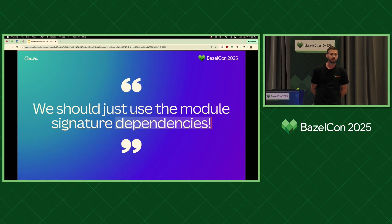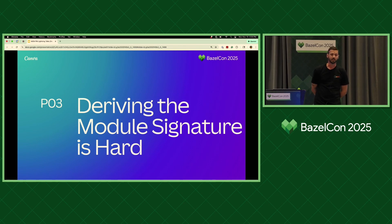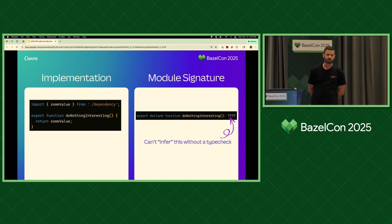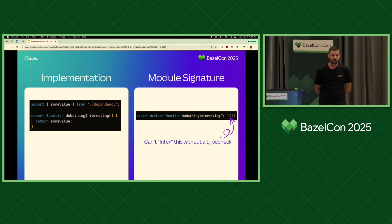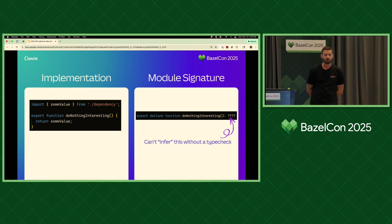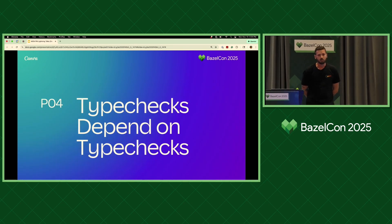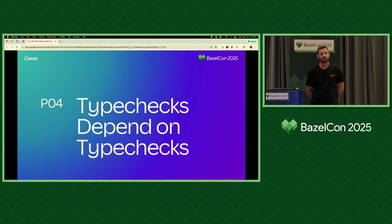Naively, you might just say, why don't we use the module signature dependency graph then? Unfortunately, it's not quite that simple. The reason is that deriving the module signature is surprisingly hard. Here's a simple example: we define a simple function with no return type — TypeScript lets you skip annotations — and it returns a value that comes from another dependency. At type check time, TypeScript can scan the body of the function and understand what the return type should be. However, when we need to derive a module signature for this, the return type is unknown. We can't decide what that is without doing the full analysis that TypeScript does. This means declaration files require a type check to resolve. If we want to type check a target, we have to get the declaration files for all of its dependencies, but to get those we need to type check those dependencies, and so on — type checks all the way down.